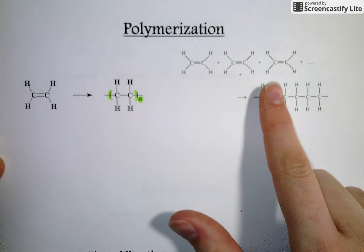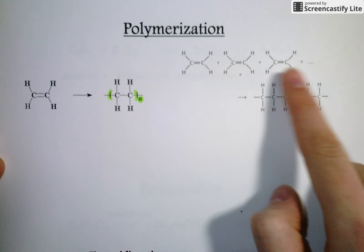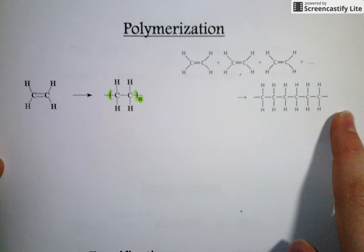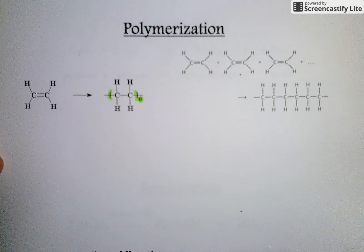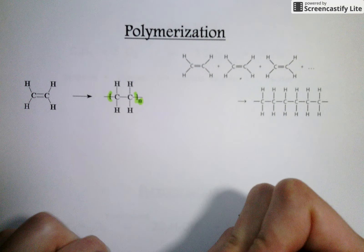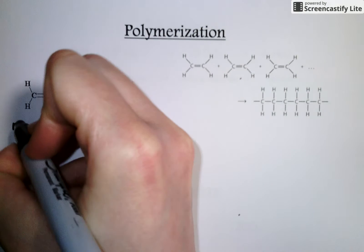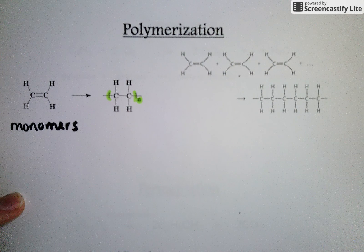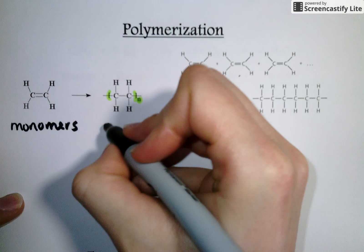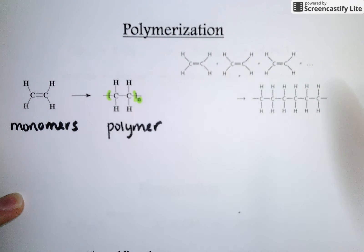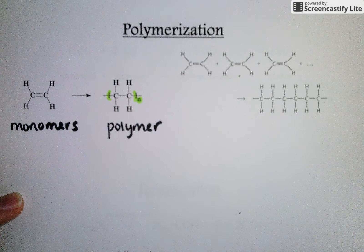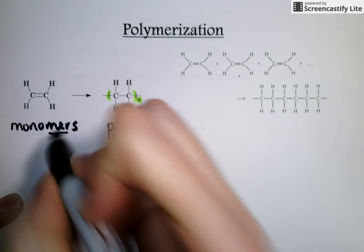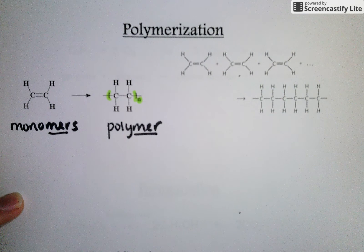If you want to see that represented in another way, really what we're doing is taking all these ethene molecules and sticking them together to form this much longer molecule. And we have some terminology for that. These individual units we call monomers. And when we stick lots and lots of monomers together, we get a polymer.